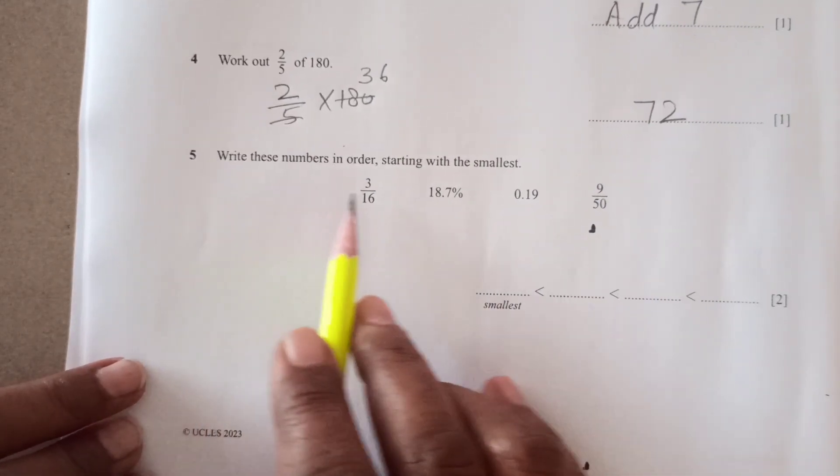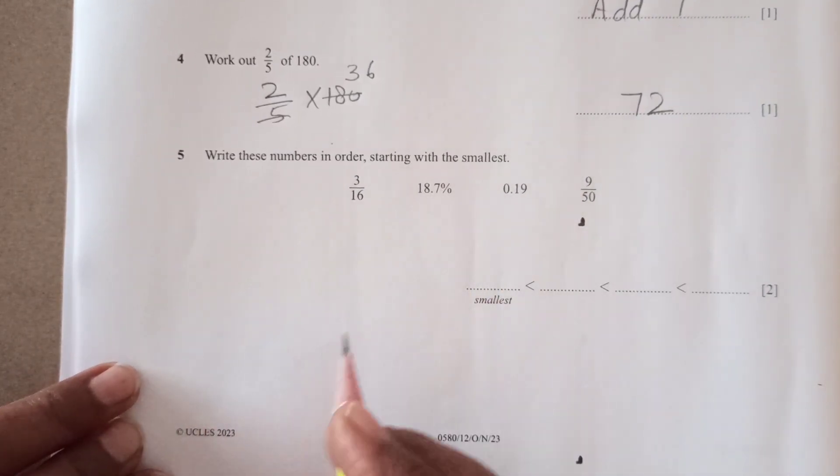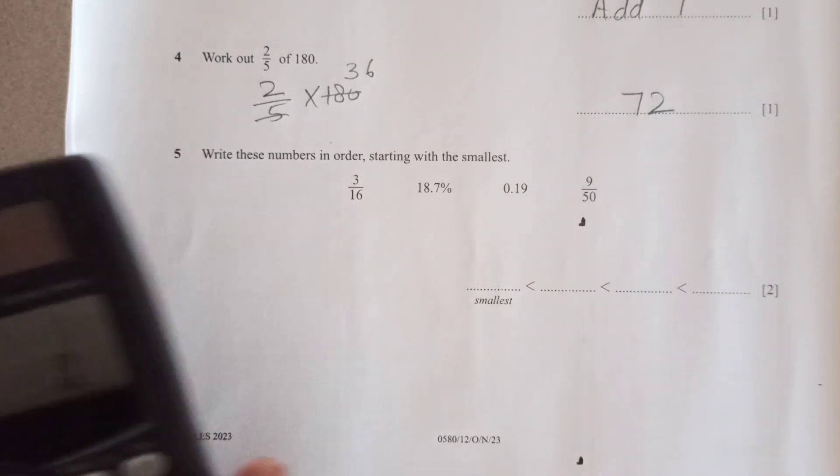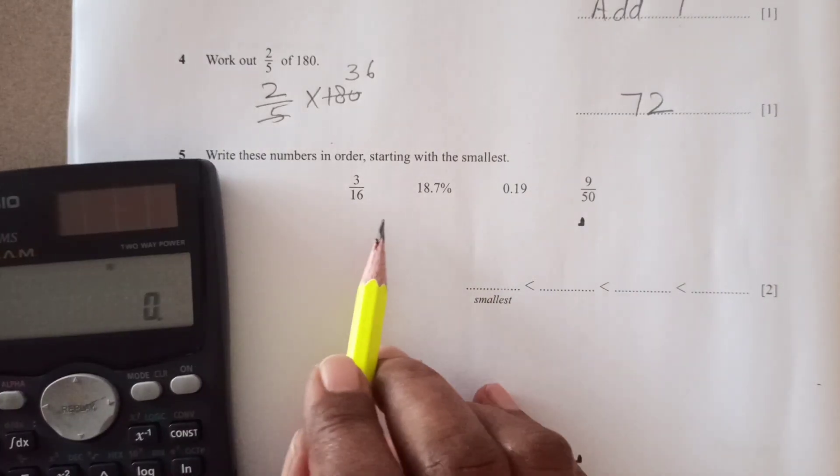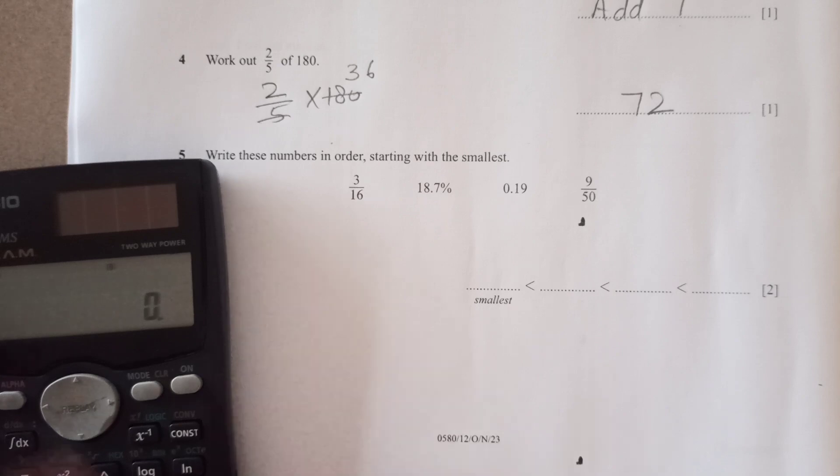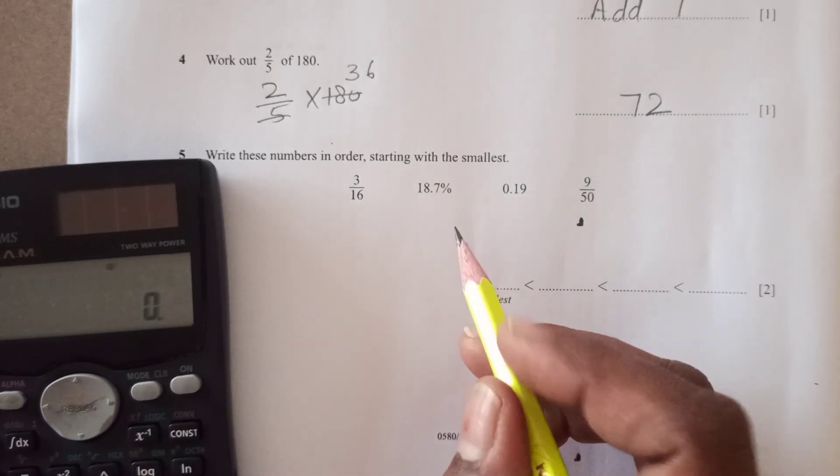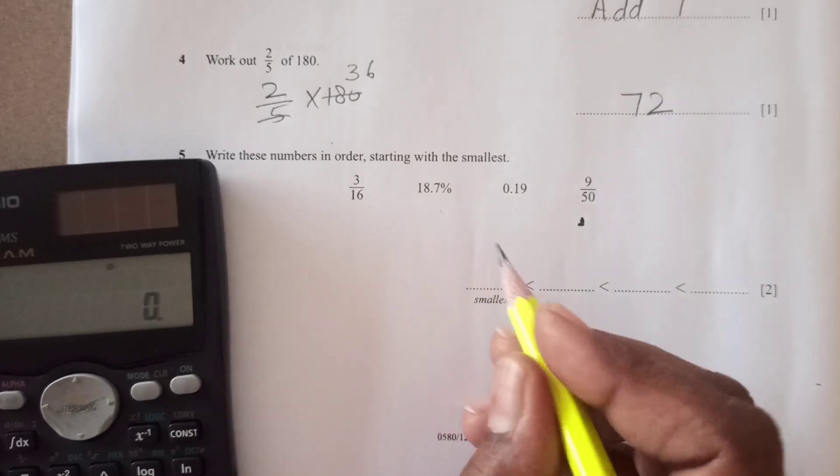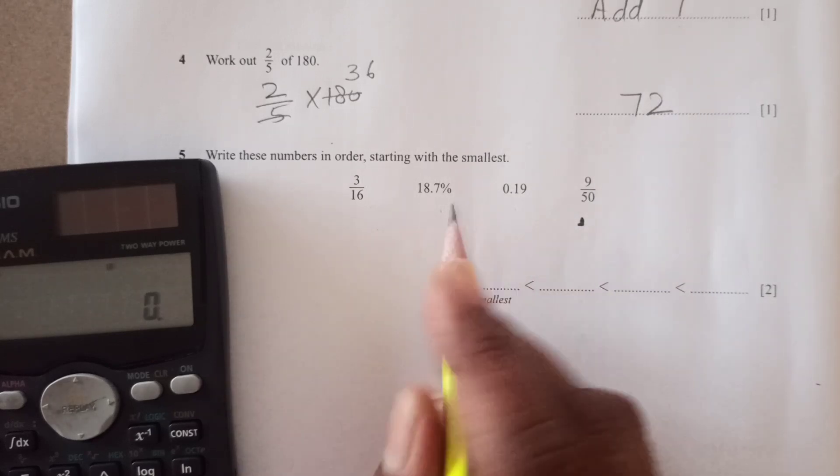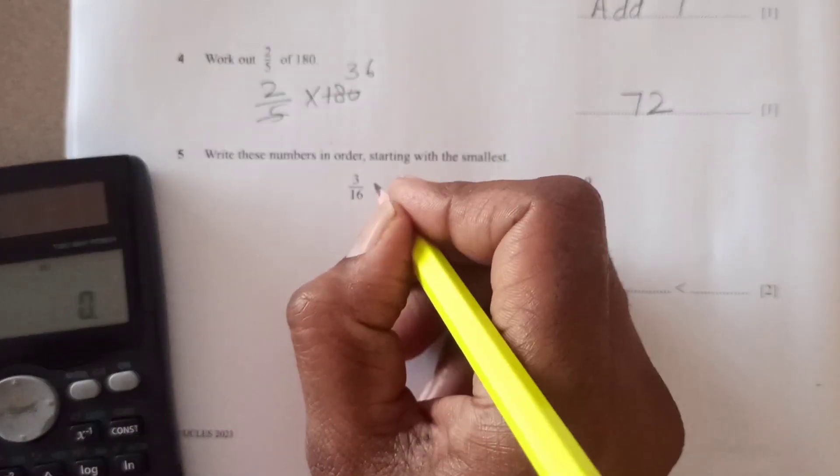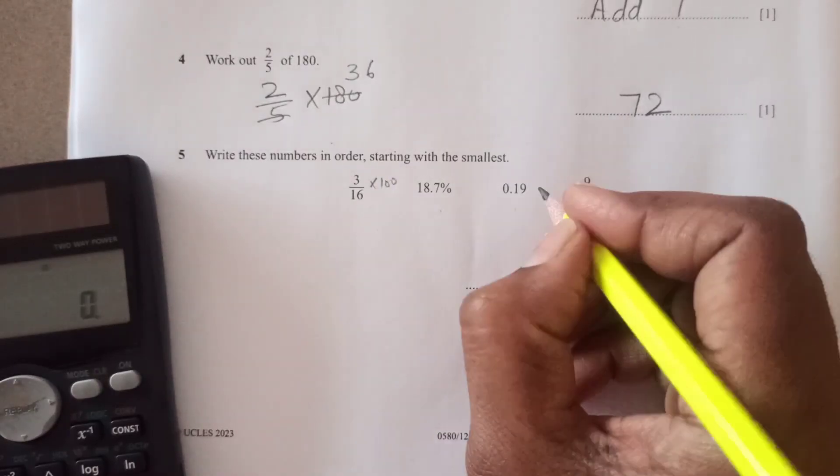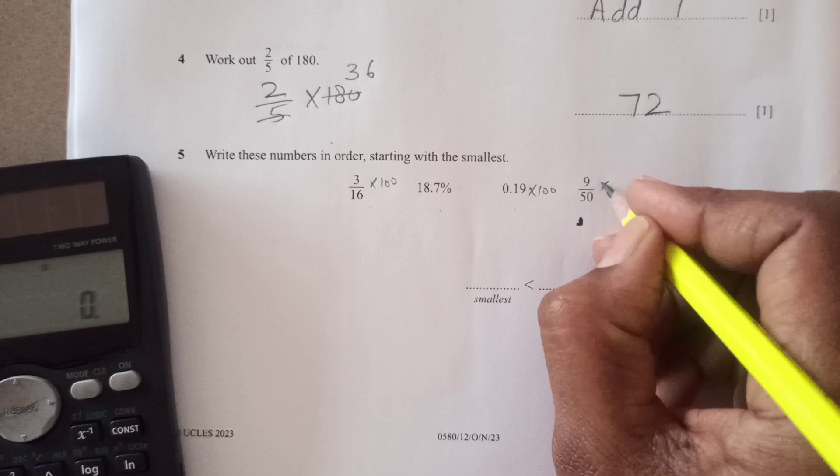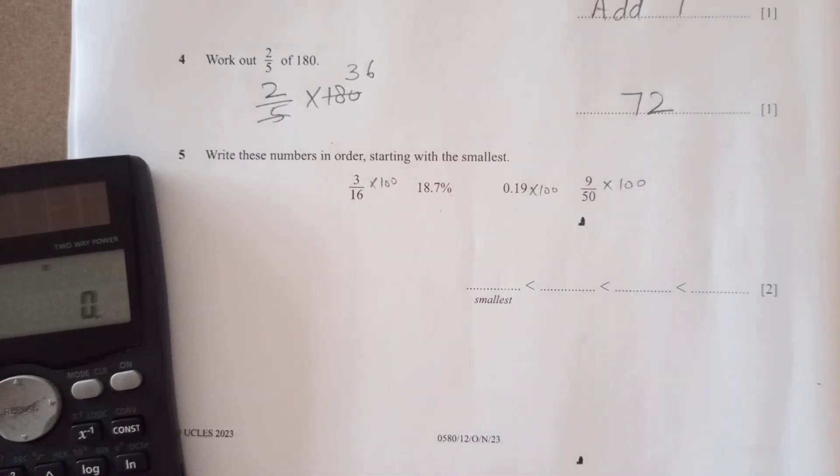Now write these numbers in order starting with the smallest. So we can use calculation because they all have different forms. This is fraction, percentage, decimal and fraction. So it's easy when you make them the same. So if I multiply this by 100, this will become a percentage.